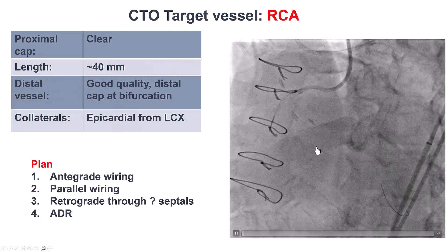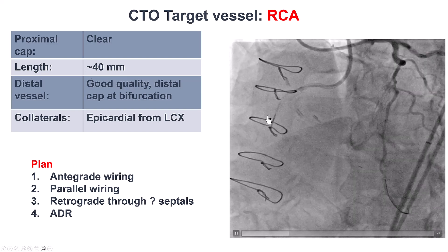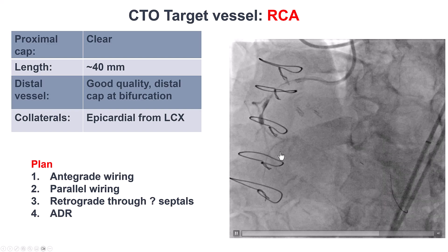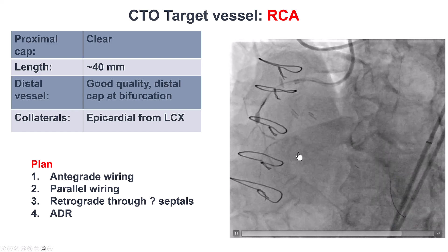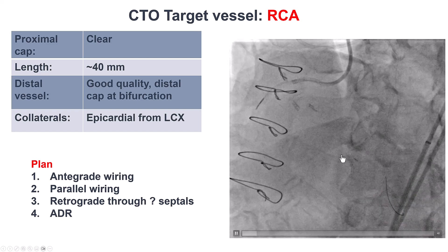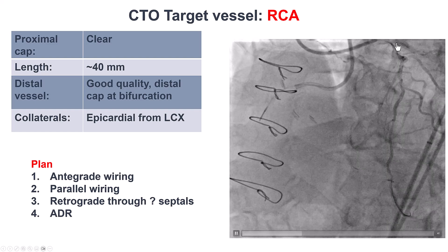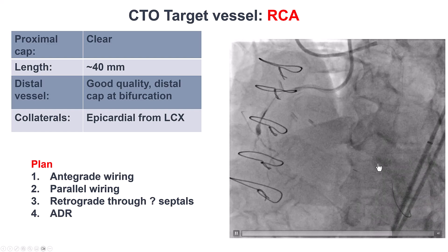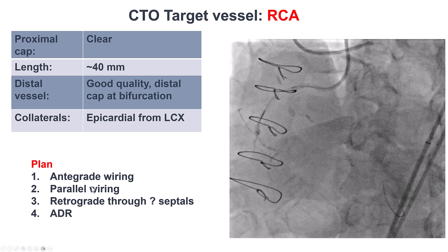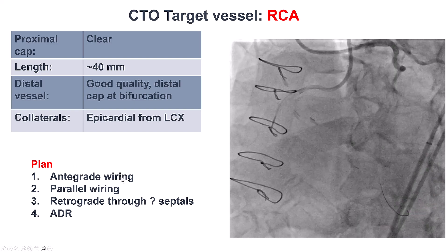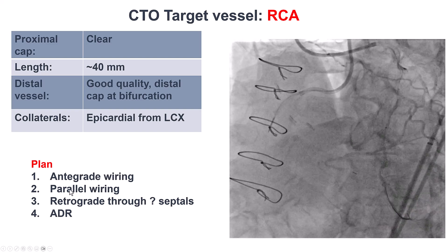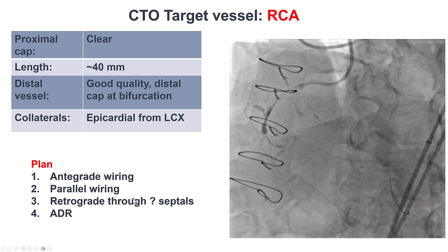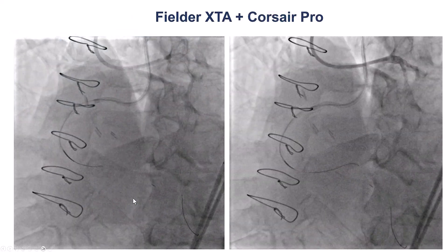To summarize, we have an RCA CTO with a clear proximal cap. The length is about 40 mm, with a bifurcation distal cap, and dominant circumflex collaterals filling the right posterolateral and some septals. Given this anatomy, the plan was to start with antegrade wiring, then potentially try retrograde through septals, and if everything fails, go for ADR.